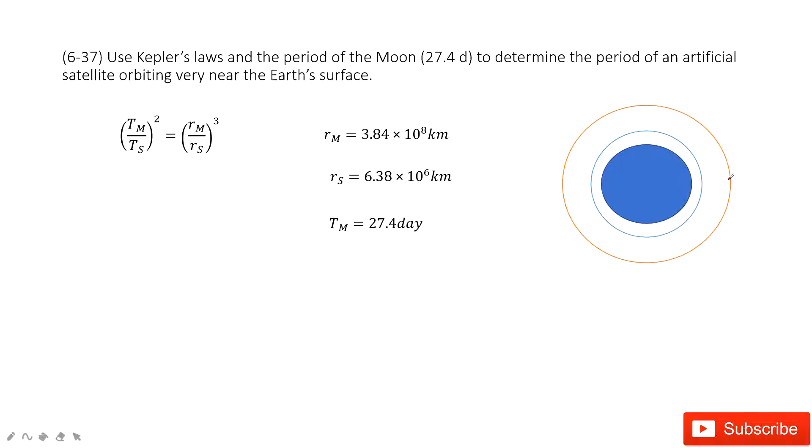And then this is the Moon. You can see, we know the period of the Moon, and we need to determine the period for this artificial satellite.